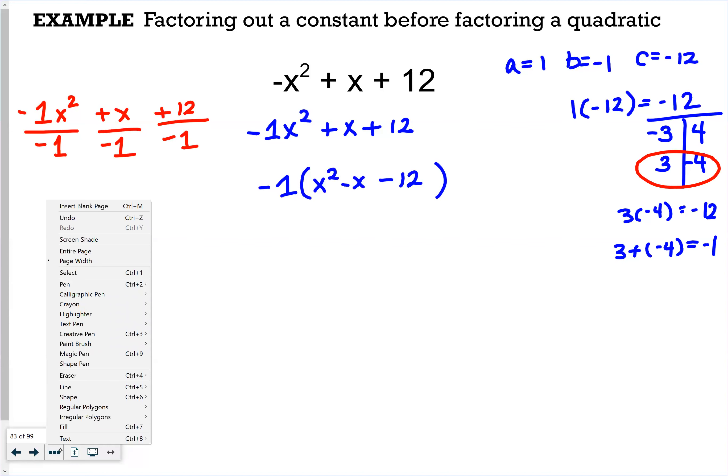So I have -1, then parentheses, two sets of parentheses actually. And the first set I'm going to put x + 3, and the second set I'm putting x - 4.